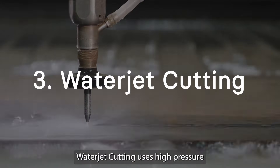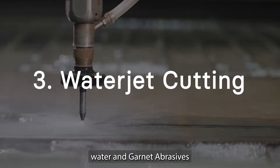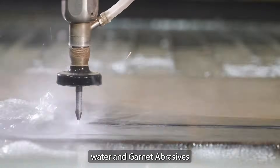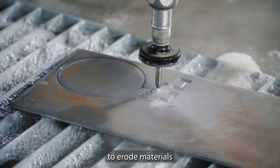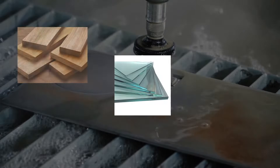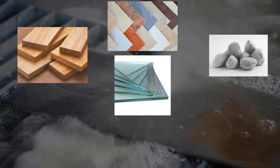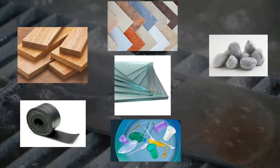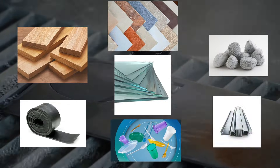Waterjet cutting uses high-pressure water and garnet abrasives to erode materials such as glass, wood, tile, stone, rubber, plastic, and metal.